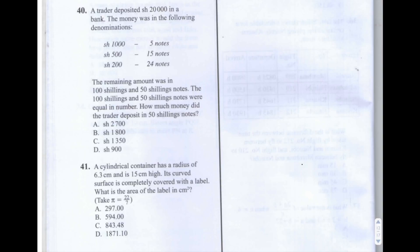The money was in the following denominations: 1,000 shillings — 5 notes; 500 shillings — 15 notes; 200 shillings — 24 notes. The remaining amount was in 100 shillings and 50 shillings notes. The 100 shillings and 50 shillings notes were equal in number. How much money did the trader deposit in 50 shillings notes?